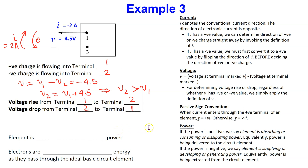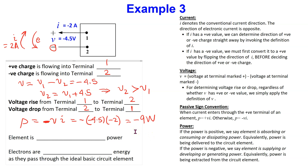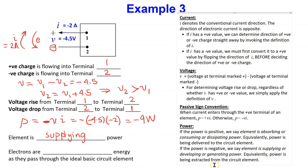To determine the power, power is given by the product of voltage and current. The conventional current is entering the terminal marked plus, so we write power with a minus sign and substitute values: minus 4.5 times minus 2, giving minus 9 watts. Since the power is a negative value, we say that the element is supplying power. Since the element is supplying, developing, or generating power, electrons are gaining energy as they pass through the ideal basic circuit element.